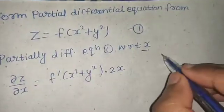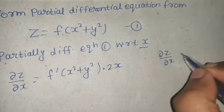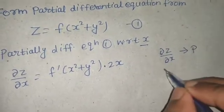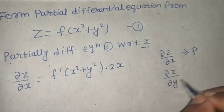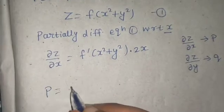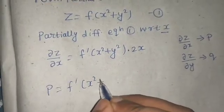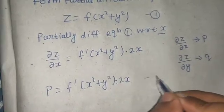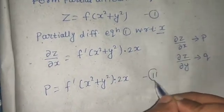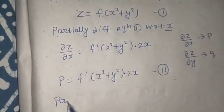As I always say, del z by del x is also written as p, and del z by del y is written as q. So this can be written as p equals f dash(x² + y²) times 2x. This becomes equation number two.